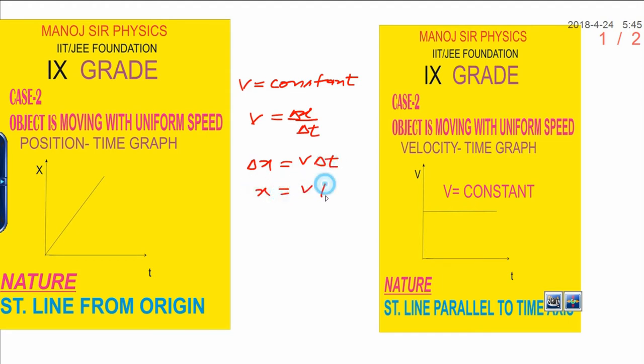In short, you can write x equals vt. You know this thing is constant. If this is constant, you can write x directly proportional to t. Both having the same power of 1, it means a straight line is obtained.